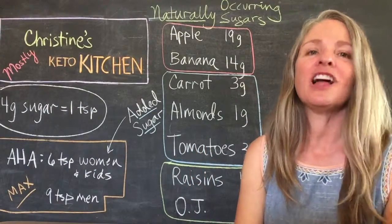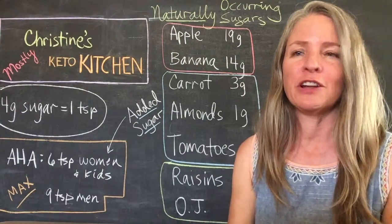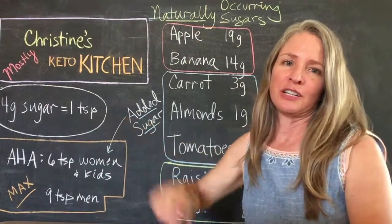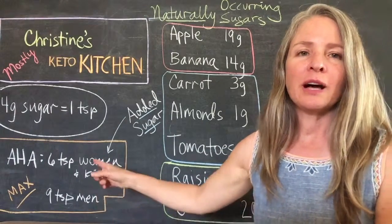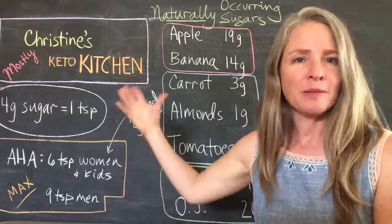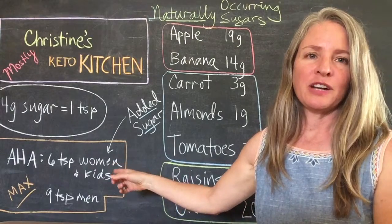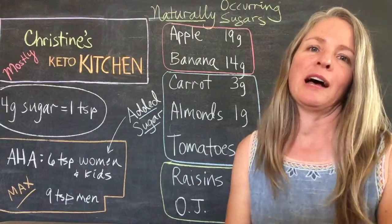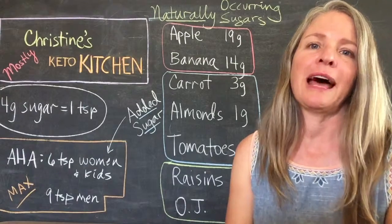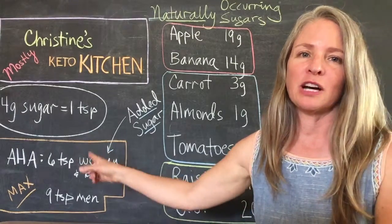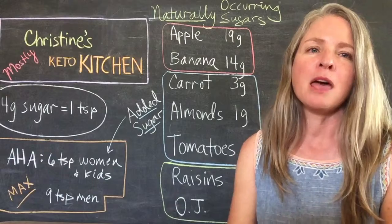It's a lot. That's why it's really important to know that four grams of sugar equals one teaspoon. The American Heart Association has put some upper limits on how much sugar we should have — six teaspoons for women and kids, and nine teaspoons for men.